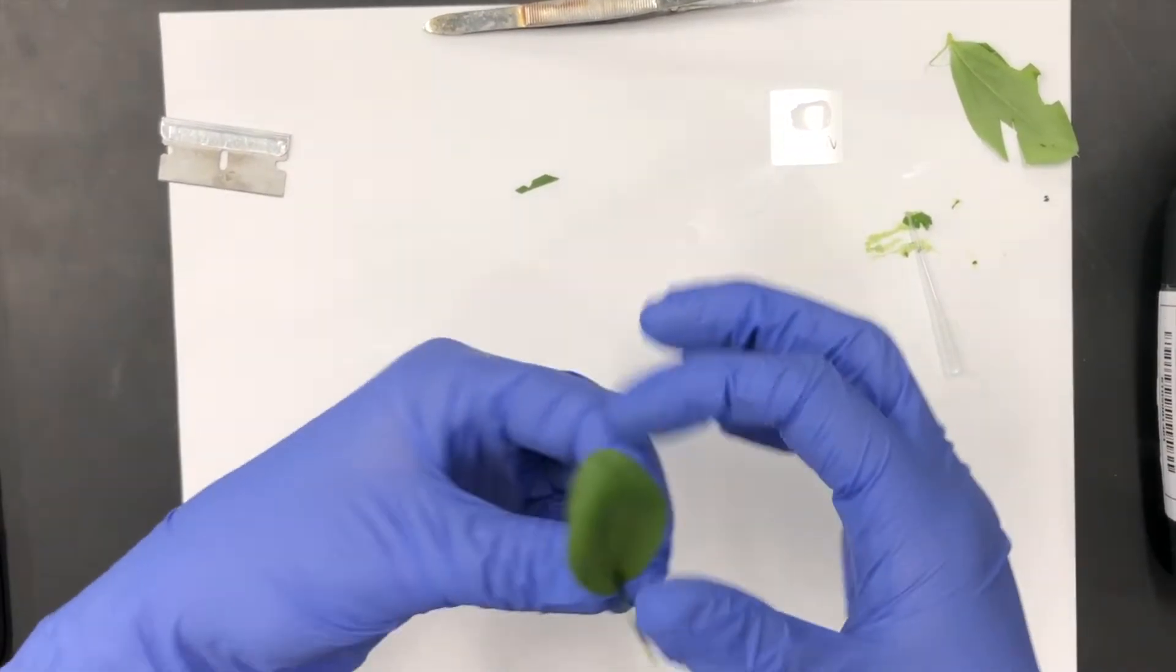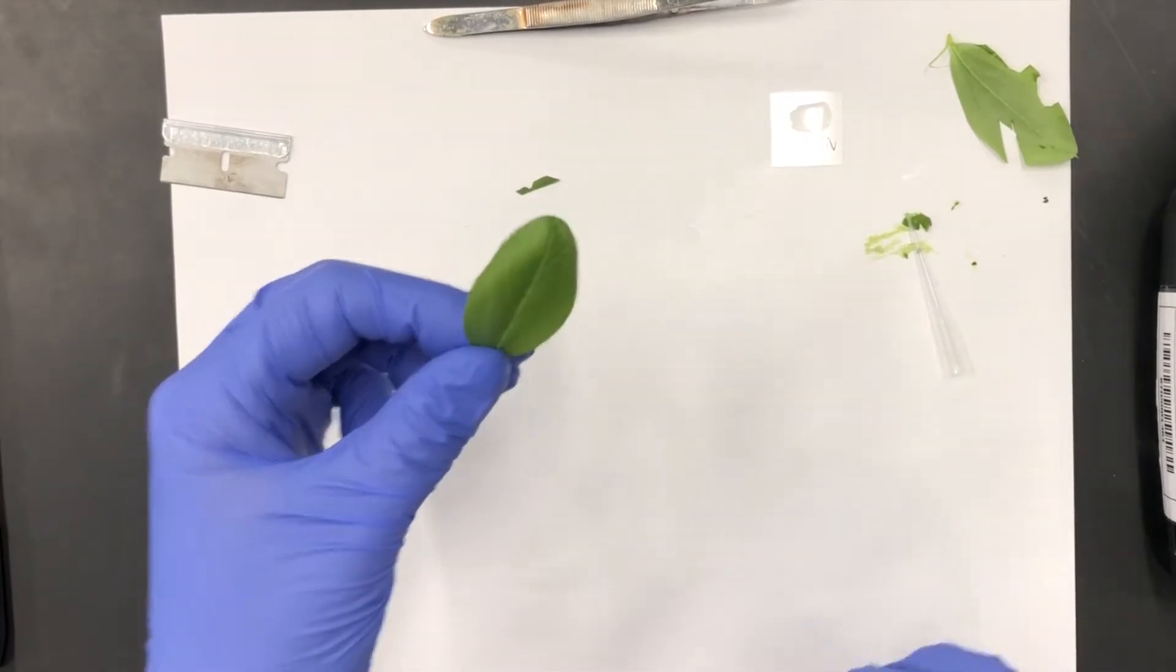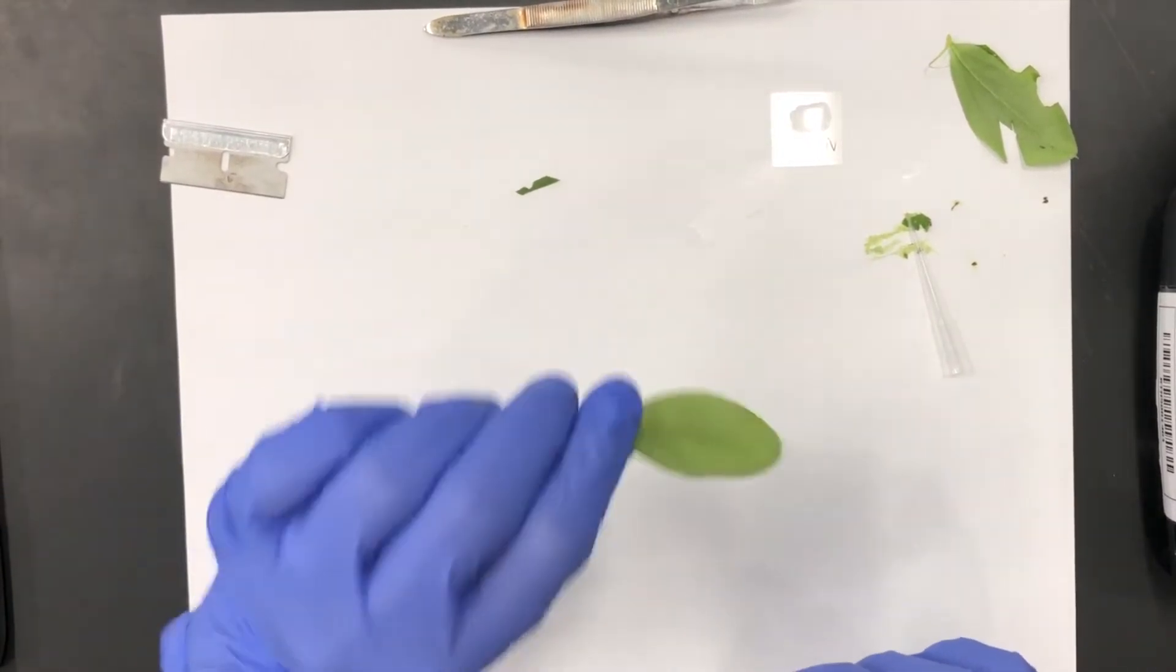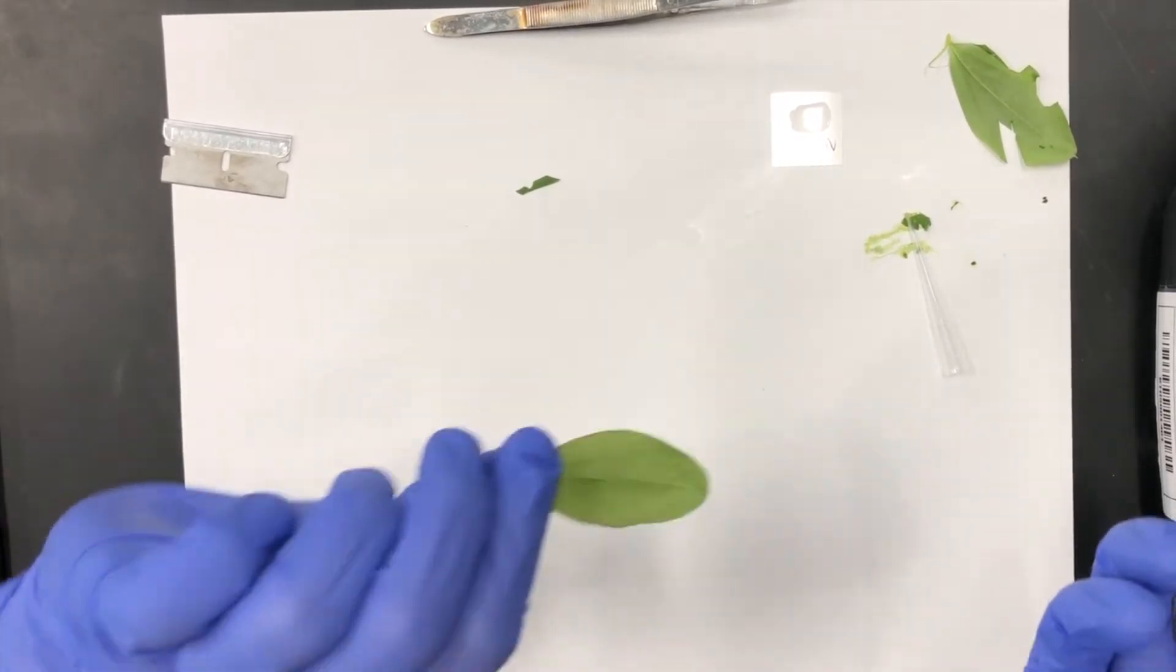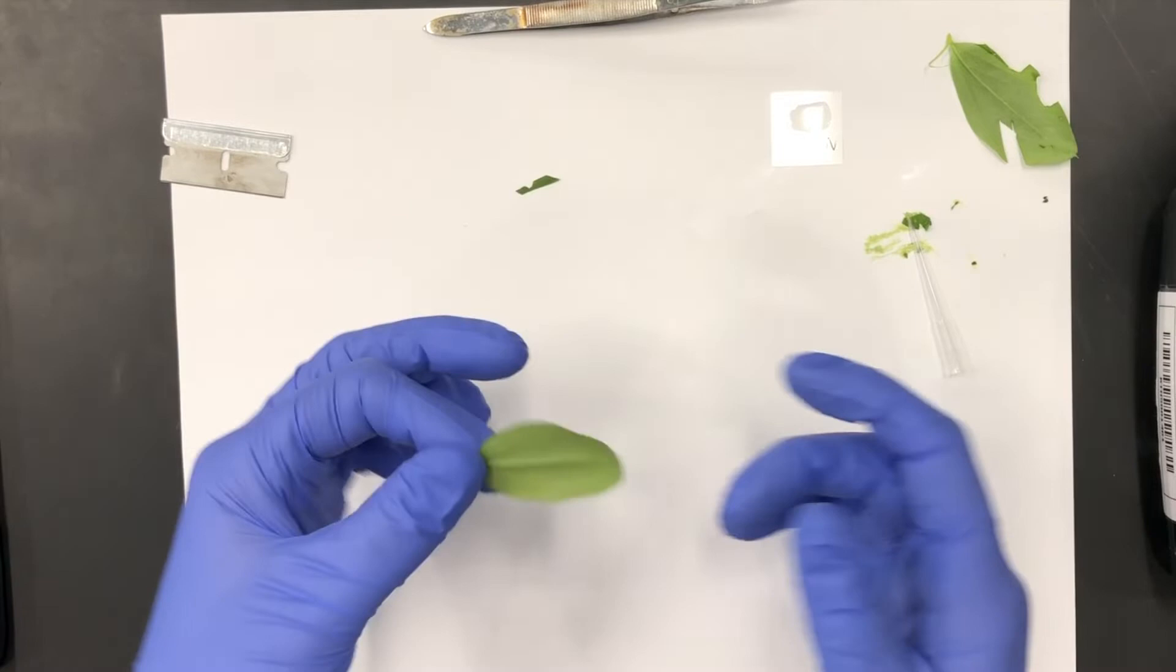Now when I'm selecting my leaf, I want to cut it from the plant at about the same location I cut all my other leaves if I'm doing an experiment and want to compare my data. But today, since I'm just doing a sample for you guys, I just took my leaf from the middle part of the plant.